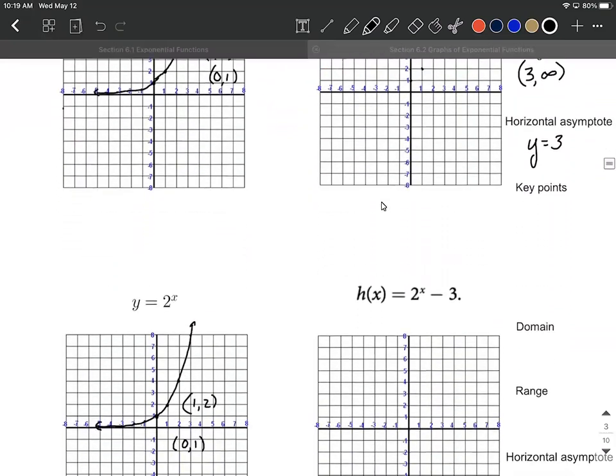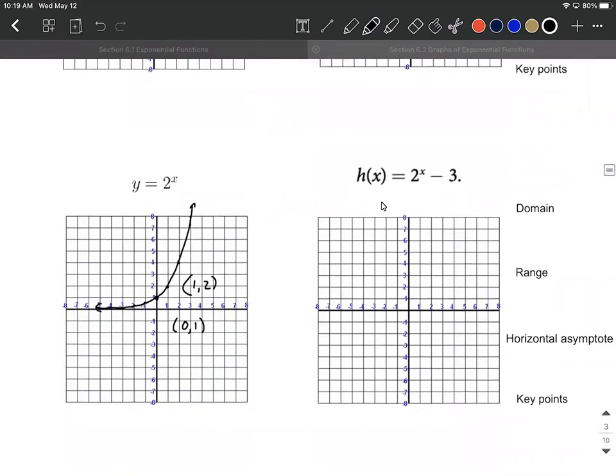Let's look at one more example of this vertical shifting when we do a 2 to the x minus 3. So in getting started, I would identify our key points for 2 to the x's graph. Again, 0, 1, and 1, 2. I'm just kind of reusing this graph. It doesn't always have to be 2 to the x power as your starting function. But for simplicity's sake, that's what I'm doing. It's always 1 comma whatever the base is.